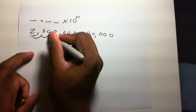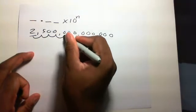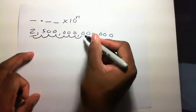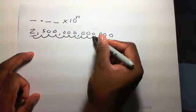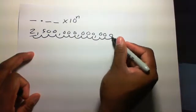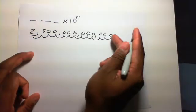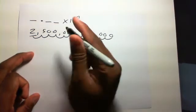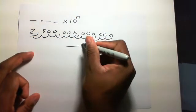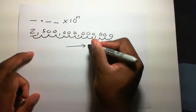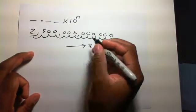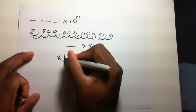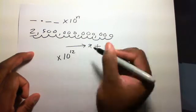1, 2, 3, 4, 5, 6, 7, 8, 9, 10, 11, 12. 12 movements. So that 12 will be the n. And because you're moving to the right, you're moving the 2 to the right, the n will be positive. So it was 12 movements, so it's 10 to the 12th.